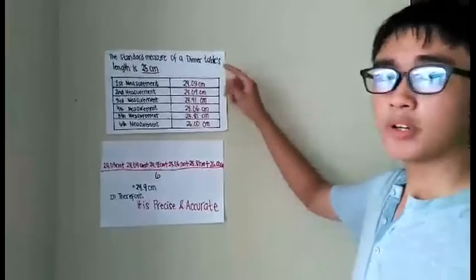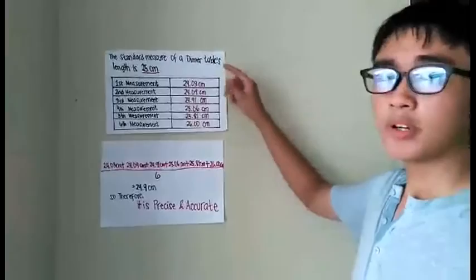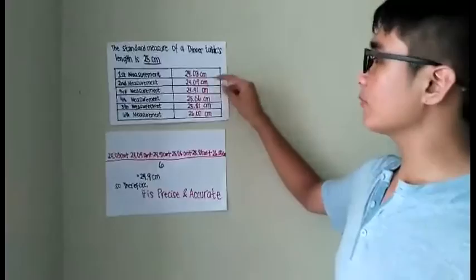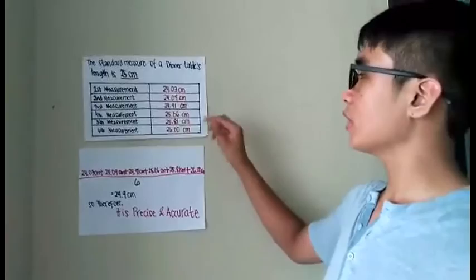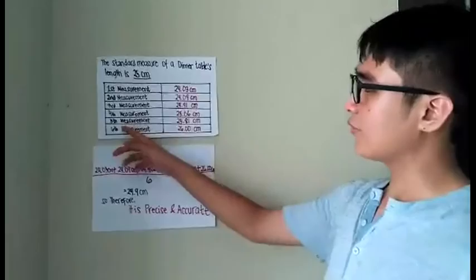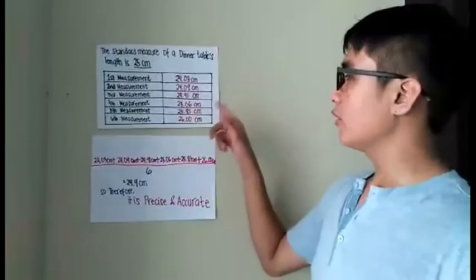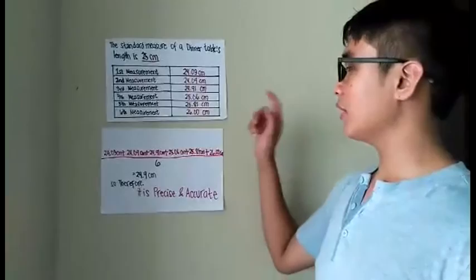The first measurement is 24.3 cm, the second measurement would be 24.9 cm, and the third measurement is 24.91 cm. My fourth measurement would be 25.6 cm, the fifth would be 25.81 cm, and lastly, my sixth would be 26.1 cm.